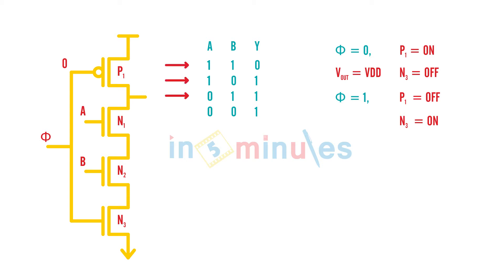So phi equal to 1, I'll make my A 1, B 1, so N1 on, N2 on. N3 is anyways on, so my output gets a path to discharge and hence my V out is nothing but 0. Cool, I got the first case.